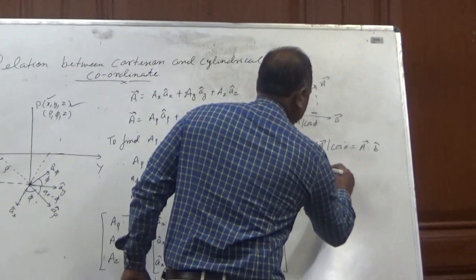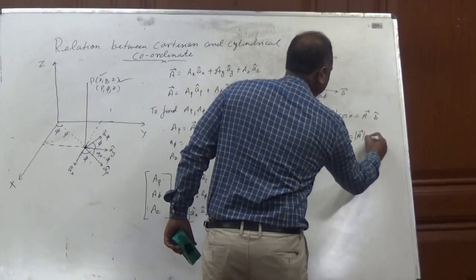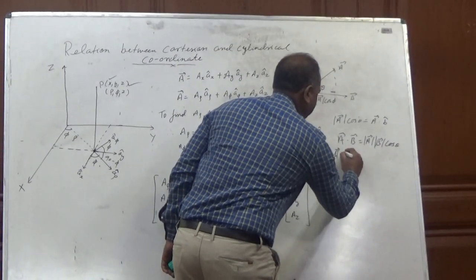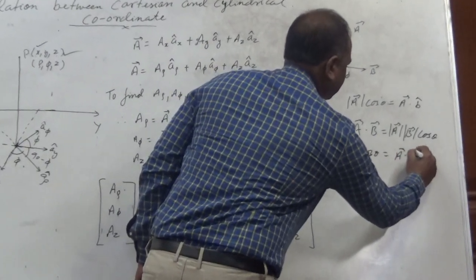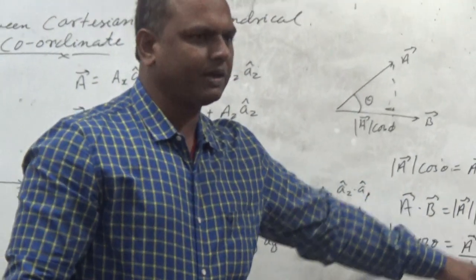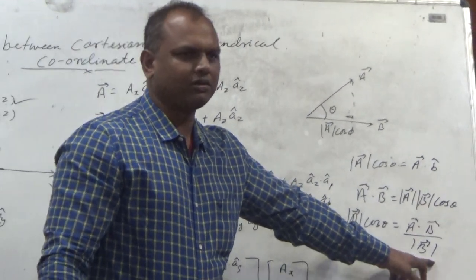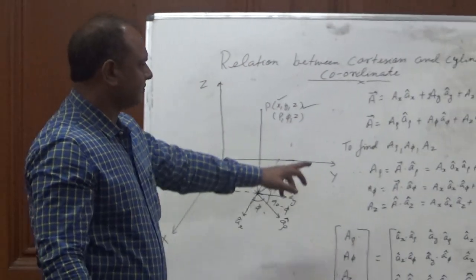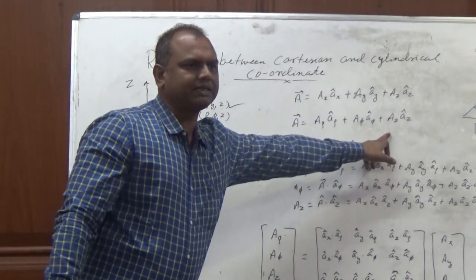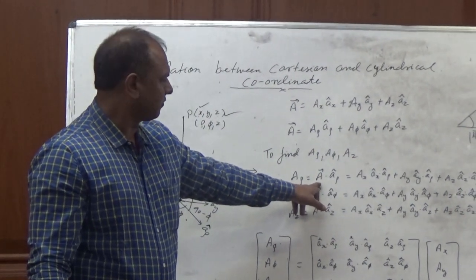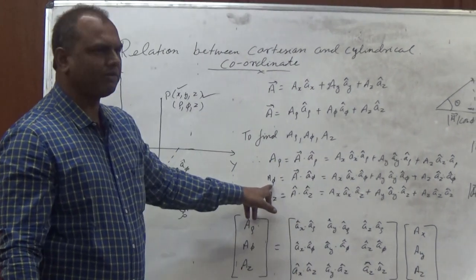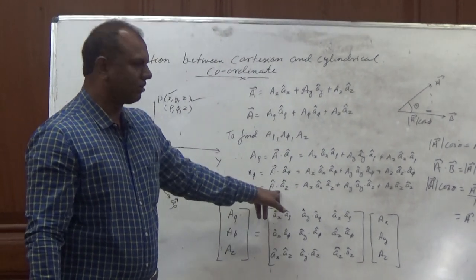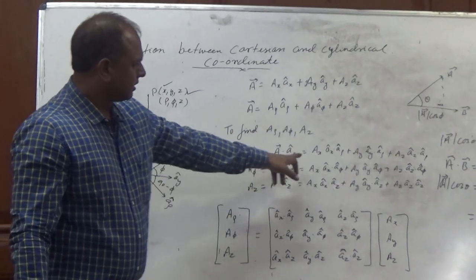Since A dot B equals magnitude of A times magnitude of B times cos(theta), we get A cos(theta) equals A dot B divided by magnitude of B, where B divided by magnitude of B is the unit vector B. In the same way we find the values of A-rho, A-phi, and AZ. A-rho is the dot product of vector A with unit vector A-rho; A-phi is A dot unit vector A-phi; AZ is A dot unit vector AZ.